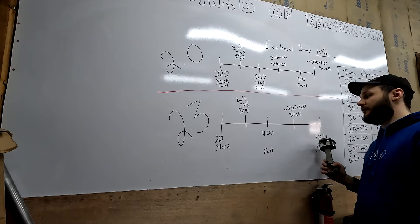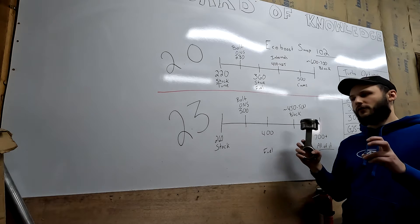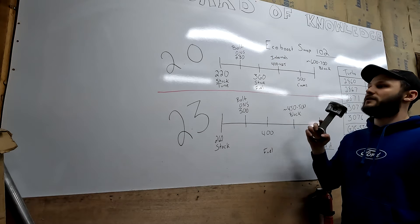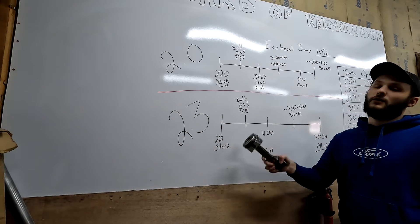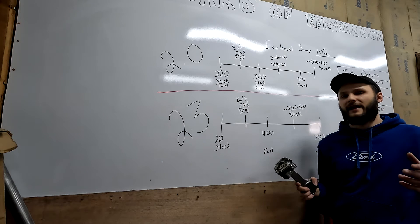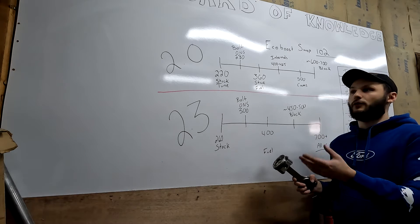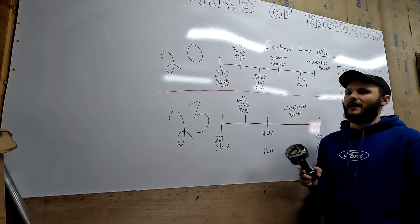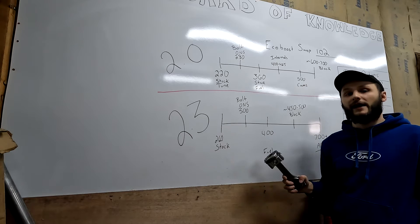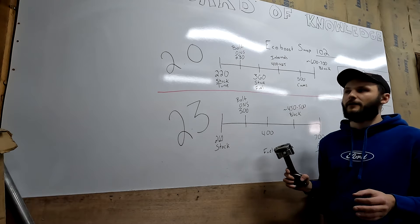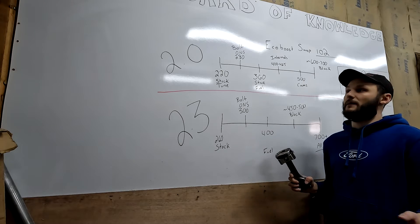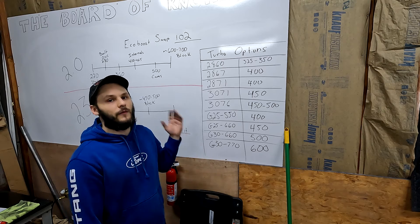To make 700 plus, which is possible on a 2.3, you have to swap over to a 2.0 liter block with the 2.3 internals. So basically a stroked out 2.0, a 2.0 stroked to 2.3, with that you can also put the 2.3 head on because it flows slightly better, well I shouldn't even say slightly, it flows quite a bit better than the 2.0 head.